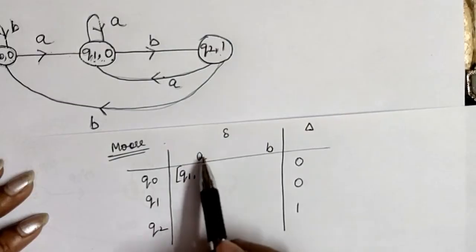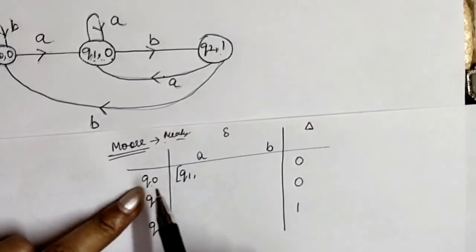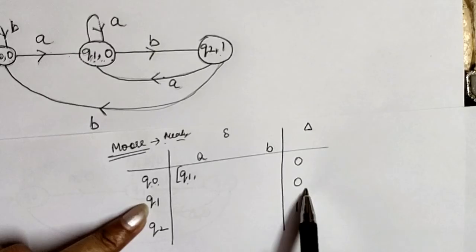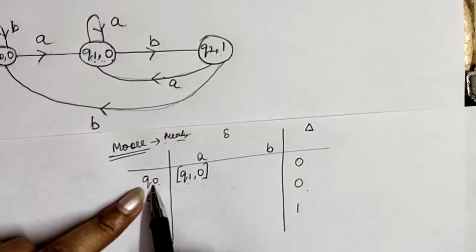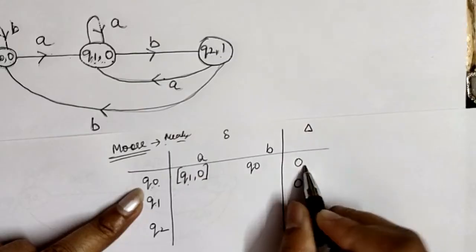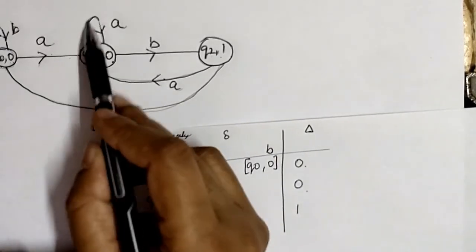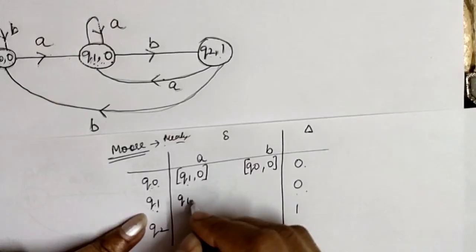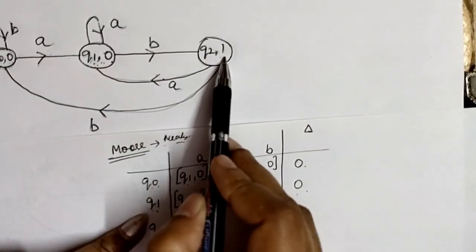To convert the Moore machine into a Mealy machine using the table: Q0 with input A moves to Q1, and Q1 is associated with output 0, so we move this output to the transition. Q0 with input B moves to the same state Q0, and Q0 is associated with output 0, so this 0 is moved to the transition B. Q1 with input A moves to Q1, and Q1 is associated with output 0, so this 0 is moved with transition A.